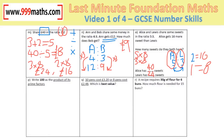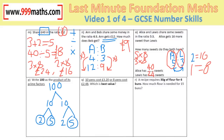100 as a product of its prime factors: 100 is 10 times 10; 10 is 2 times 5, both prime; and the other 10 is also 2 times 5. The answer is 2 times 2 times 5 times 5, or in index form: 2 squared times 5 squared.